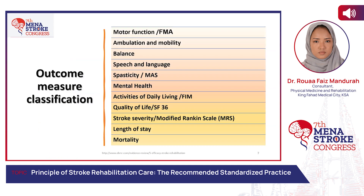To measure outcome, there are different classification systems. One is the FIM — Functional Independence Measure. We also rely on motor function through the Fugl-Meyer Assessment score, ambulation and mobility, balance, speech and language, spasticity through modified Ashworth scales, mental health, activity of daily living, quality of life via SF-36, stroke severity by modified Rankin scale, and eventually mortality.